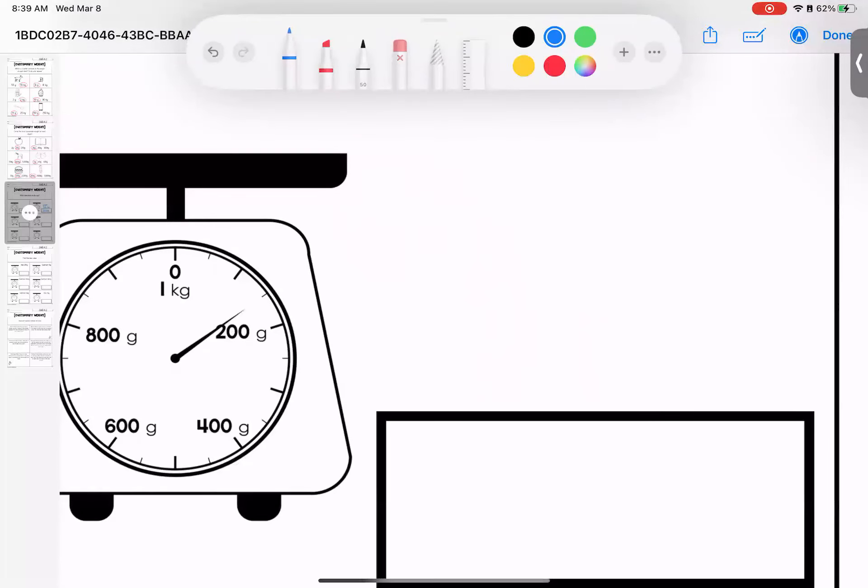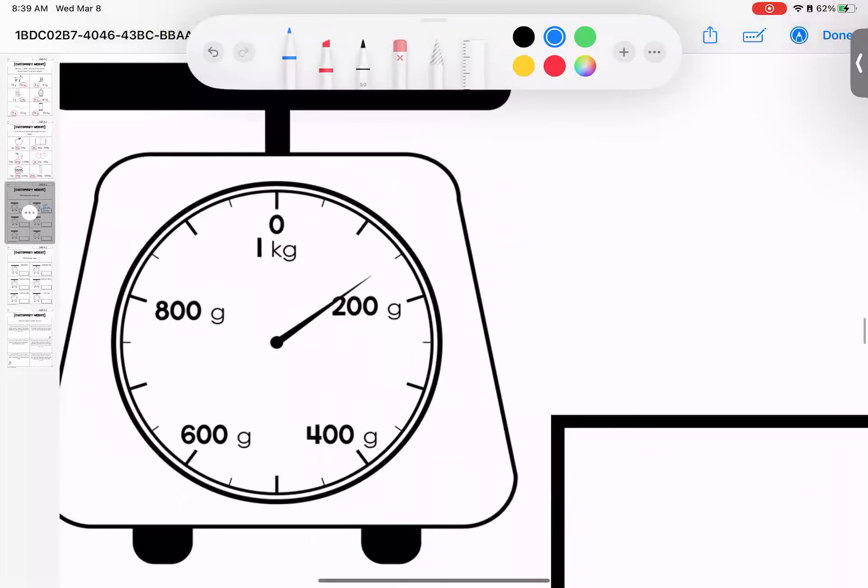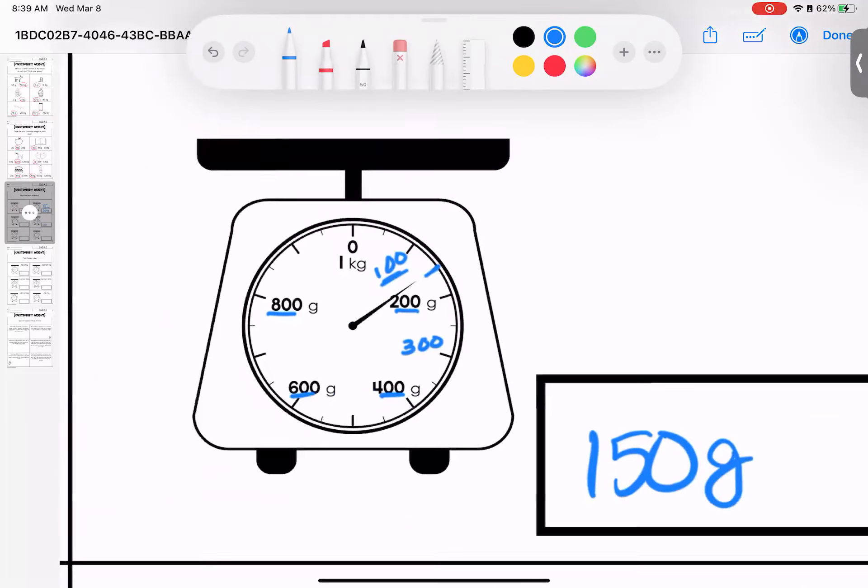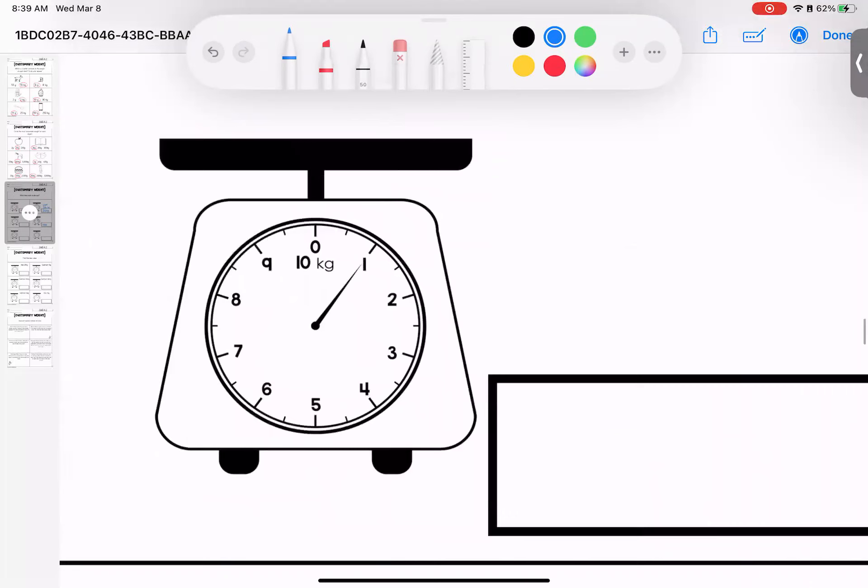Down here, we're measuring in grams. This one was tricky. It's counting up by twos. We have a dark line to show us the odd numbers and then we also have an in between. So if I'm looking, it's 100. One line pass would be half, so 150 grams. Over here, pretty easy peasy, right on the line. It tells us it's kilograms. This is one kilogram.